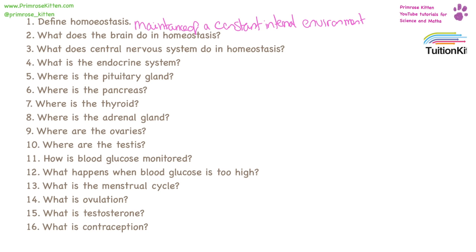What does the brain do in homeostasis? This is the control centre of everything. The nervous system does quite a lot in homeostasis. It controls heart rate, breathing, and the digestive system.